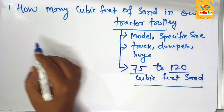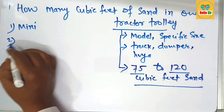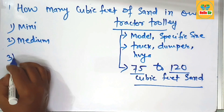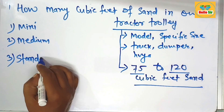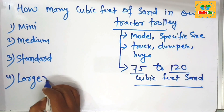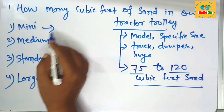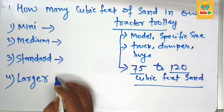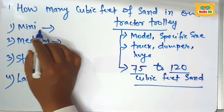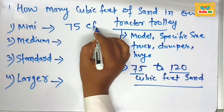Tractor trolleys come in many models and specific sizes — some are mini tractor trolleys, some are medium size. There are four types of tractor trolley: mini, medium, standard, and larger size. The mini tractor trolley will carry about 75 cubic feet of sand material.